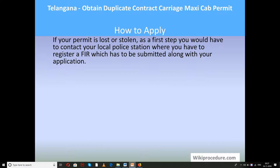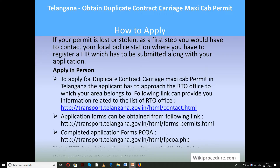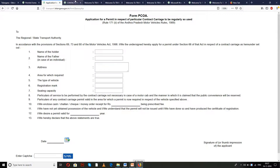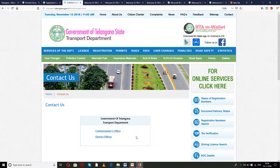How to apply: if your permit is lost or stolen, you have to approach your local police station, get the case registered, and get an FIR copy and submit the same along with your application. If not, your remaining pieces can be attached as main evidence. To apply for a duplicate contract carriage maxi cab permit in person, you have to reach your local RTO office. If you don't know the local address, please use the link below to find the contact details of your local RTO office for your area.